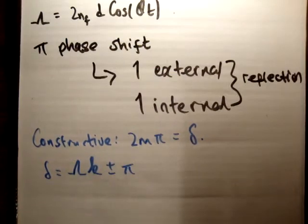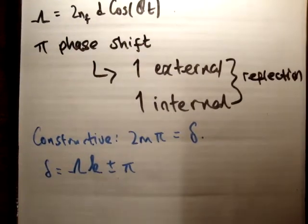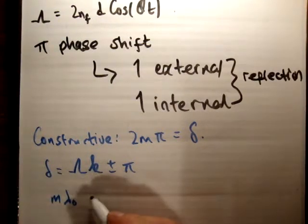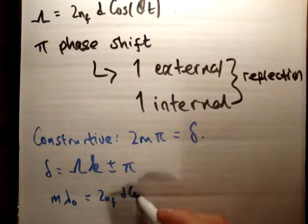So what we're going to do now is plug those values and use our formula for the optical path difference. So we're going to get that m lambda 0 is equal to 2 times n sub f times d cos theta.